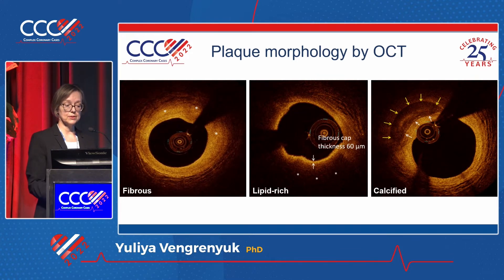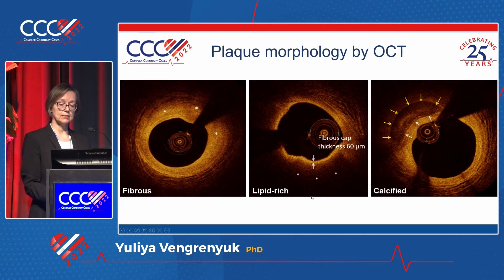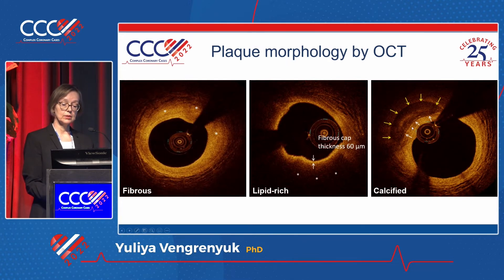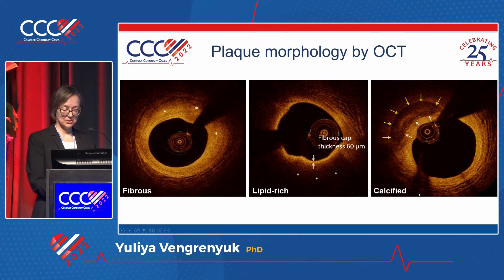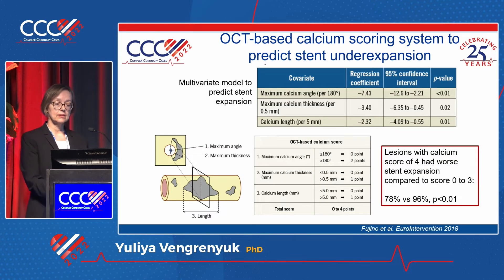Similar to IVUS, OCT shows a three-layer structure of a normal vessel wall. The main lesion types look a little different from IVUS. Fibrous plaque is a highly homogeneous high-signal area. Lipid-rich plaque has low signal with a diffuse fuzzy border. OCT can measure fibrous cap thickness and identify vulnerable lesions. For calcification, OCT can visualize the whole calcific deposit and measure thickness and area.